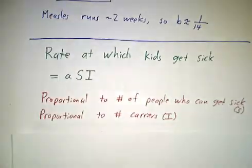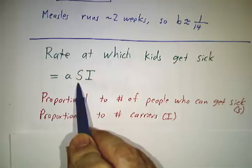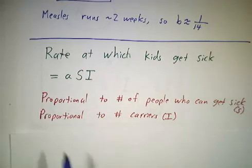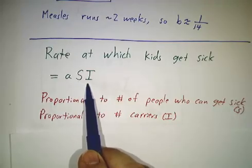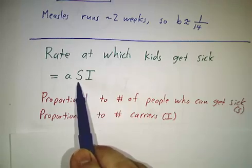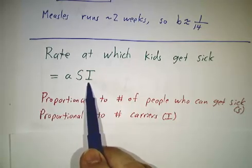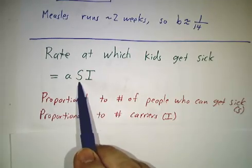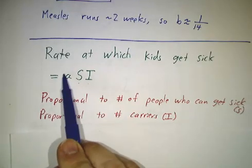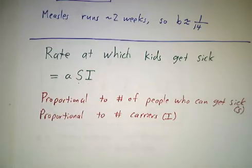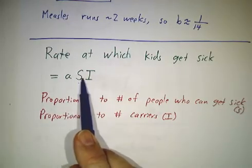The rate at which kids get sick is a little bit more subtle. See, it's proportional to the number of people who are susceptible. It's also proportional to the number of people who are already sick. Because what happens is every time a susceptible person meets an infected person, there's a chance that the infected person will give his germs to the susceptible person and make him sick. So the number of times that a susceptible person touches an infected person is proportional to the product of the number of susceptibles and the number of infected. I say proportional because there's a certain constant in front. We call that the transmission coefficient. So we say the rate at which kids get sick is some constant times the number of susceptibles times the number of infected.